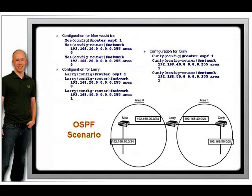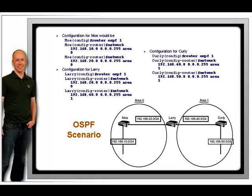We are matching the entire network of which the IP address is a part. For example, on Curly's router, the command network 192.168.40.0 0.0.0.255 area 1 tells the router to match all addresses that begin with 192.168.40. The last octet, which has 255 in the wildcard mask, is ignored. The router examines the IP addresses of its directly connected interfaces and activates OSPF on those interfaces that match that statement.